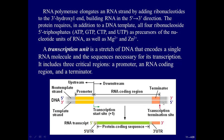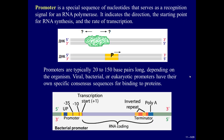Only one DNA strand is transcribed — it is called the template strand. The other strand is not transcribed; it is called the non-template strand. The promoter is a special sequence of nucleotides that serves as a recognition signal for RNA polymerase. It indicates the direction of transcription, the starting point for RNA synthesis, and the rate of transcription. When RNA polymerase binds to DNA, it finds the promoter and moves in the direction determined by the promoter. Promoters are typically 20 to 150 base pairs long, depending on the organism.